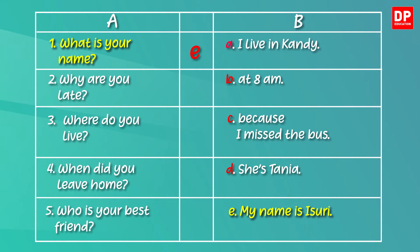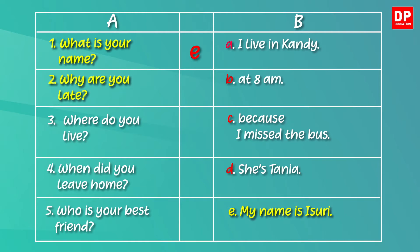Now let's check the second one. Here the question is: why are you late? As the question word is 'why', you have to give a reason as your answer. Here you have to give the reason for being late. Yes, it's C — because I missed the bus.